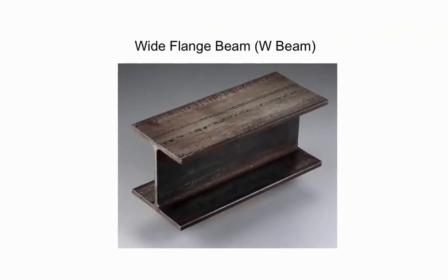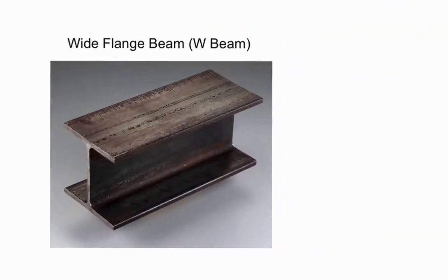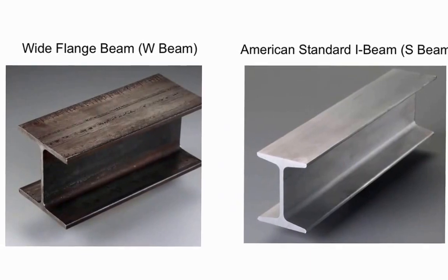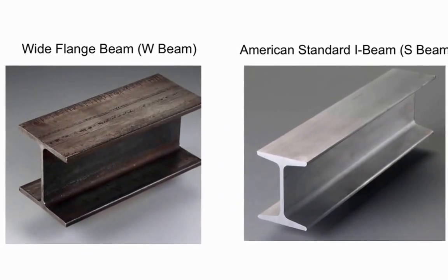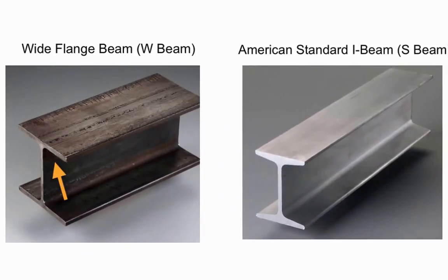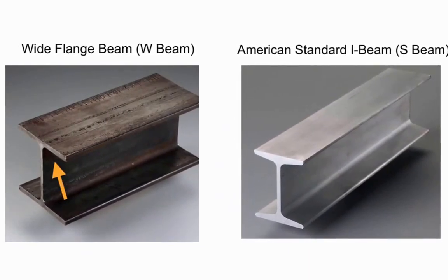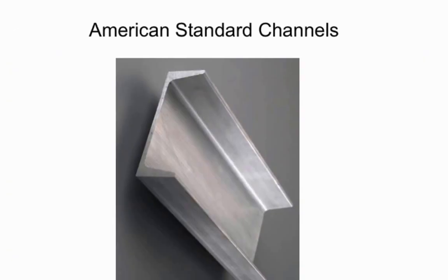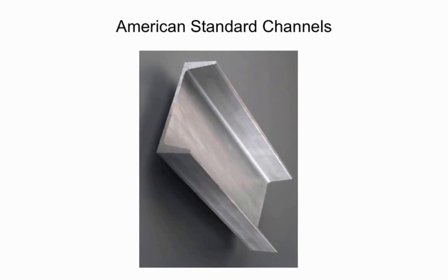Both W-beams and S-beams form a distinctive I-shape. However, the flanges on a W-beam are wider and their sides are parallel, whereas on an S-beam the flanges are tapered. In contrast, American Standard Channels form a C-shape.